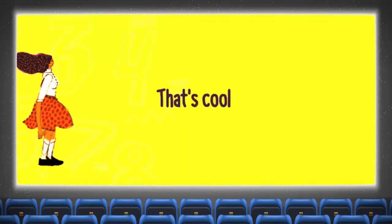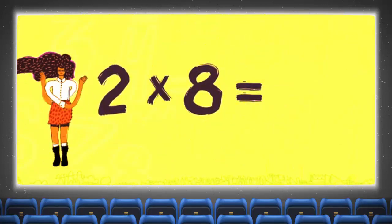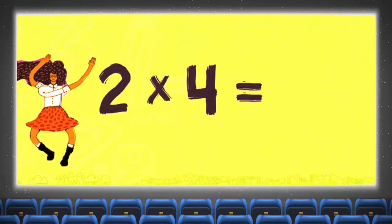That's cool. Now see if you can say the answer faster than we do. So get real fast, do the math, and don't let the rhyme go past. Two times eight is sixteen, and two times four is eight.